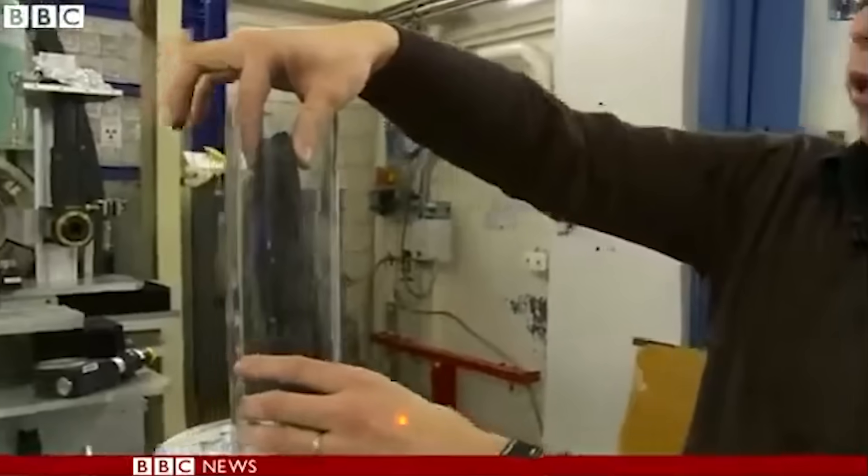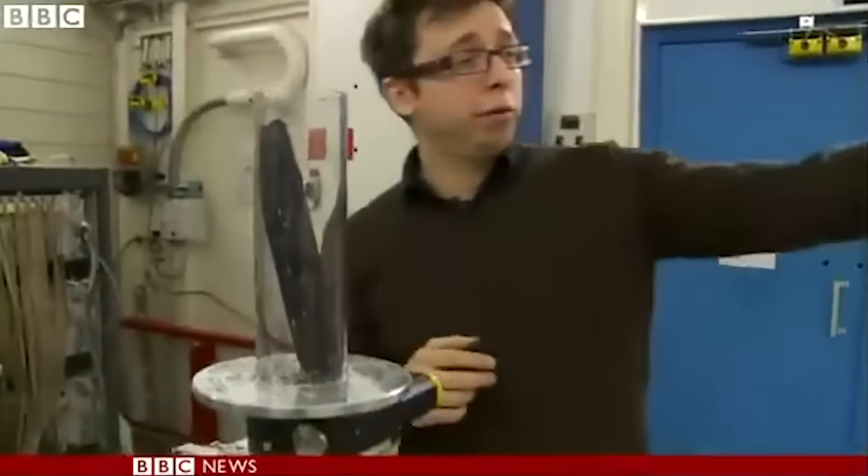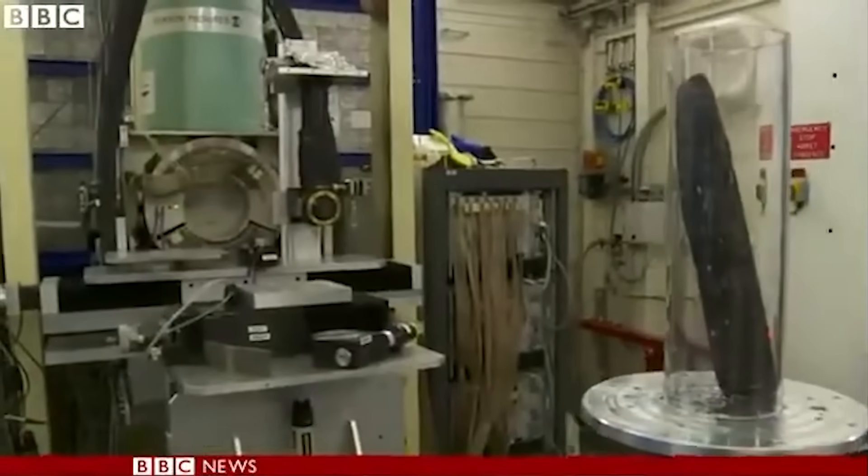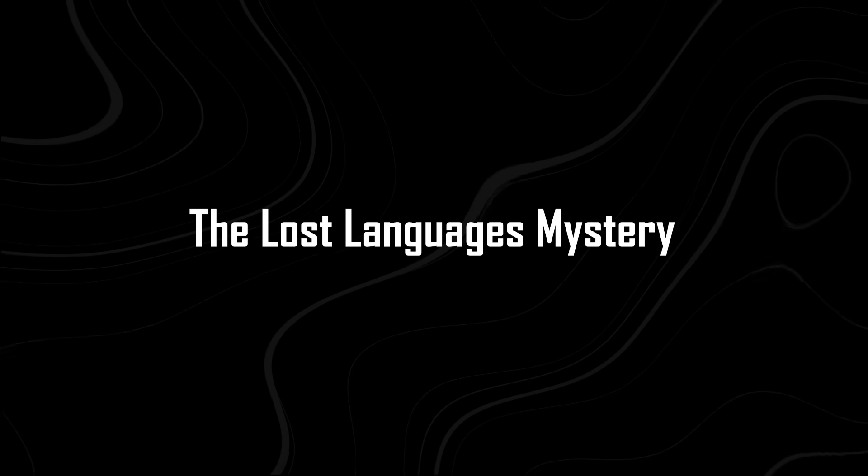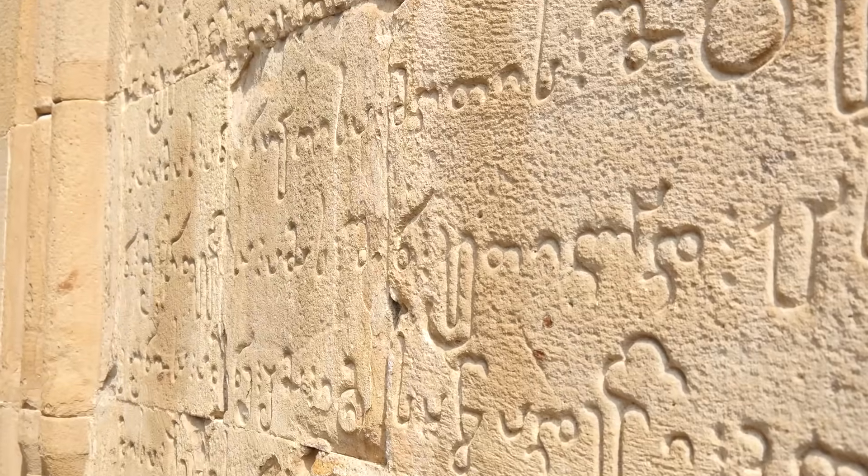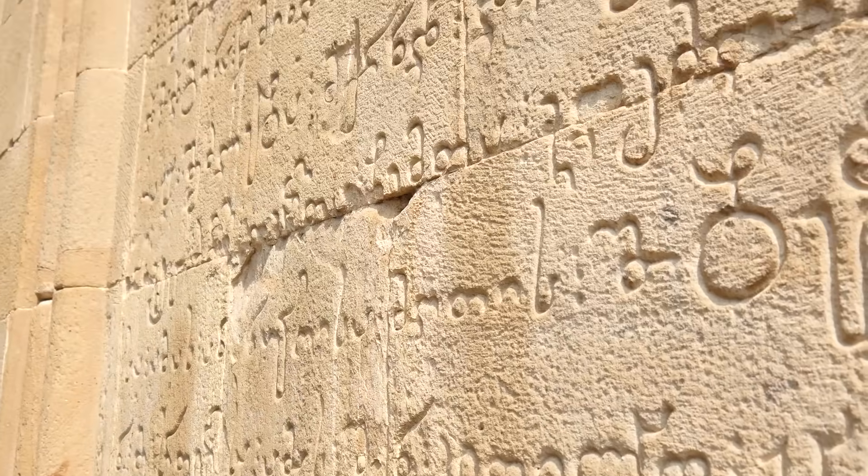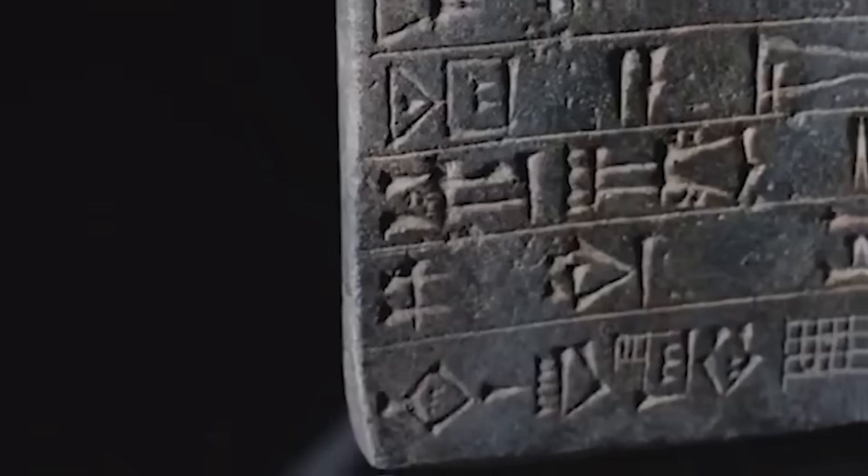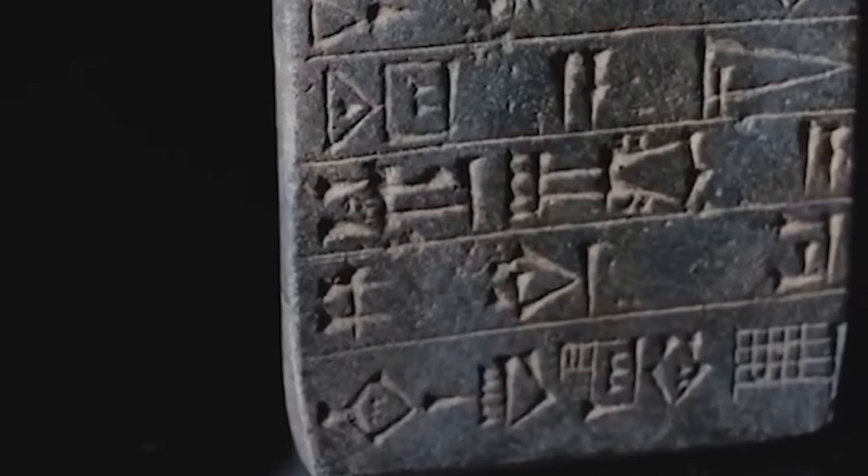Verified by BBC, MIT Tech Review, and Nature, it was the first time in history that AI helped us read a voice lost for two millennia. The Lost Languages Mystery. Imagine ancient stone inscriptions so broken or weathered that entire sentences are missing. For centuries, historians could only guess what they said.